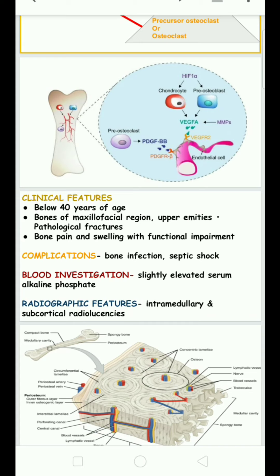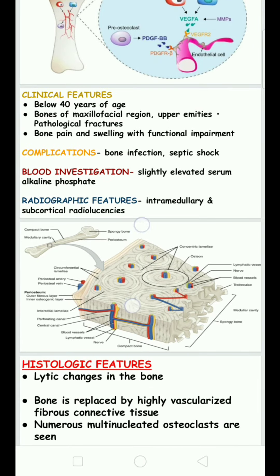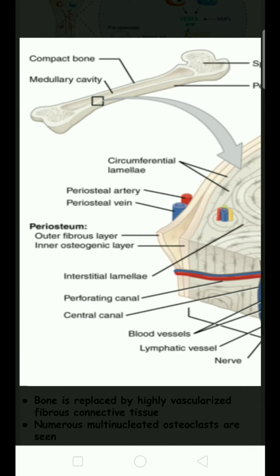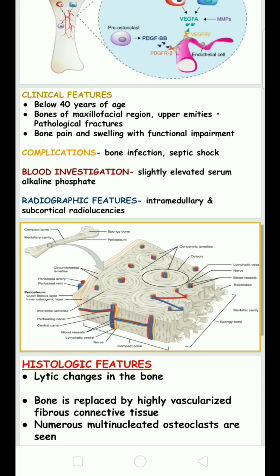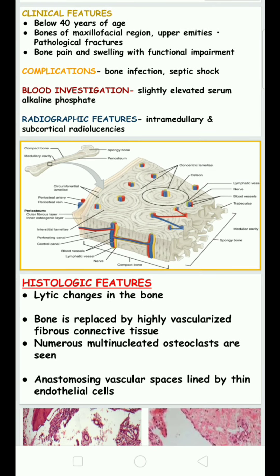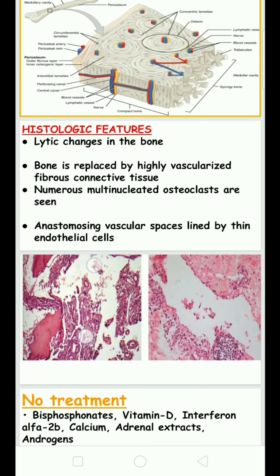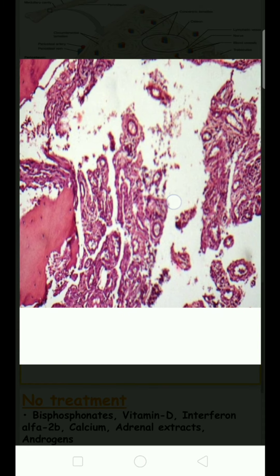The slightly elevated serum alkaline phosphatase is seen because osteoclastic activity causes breakdown of calcium and phosphorus, resulting in a high phosphorus content in the blood, which appears as elevated serum alkaline phosphatase. Radiographic features include radiolucency in the subcortical area or medullary cavity.